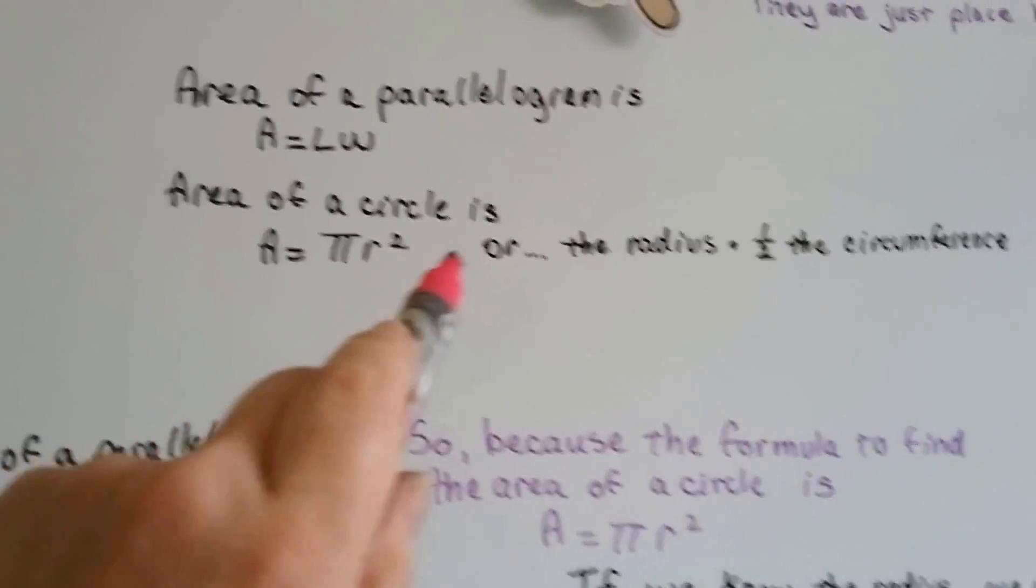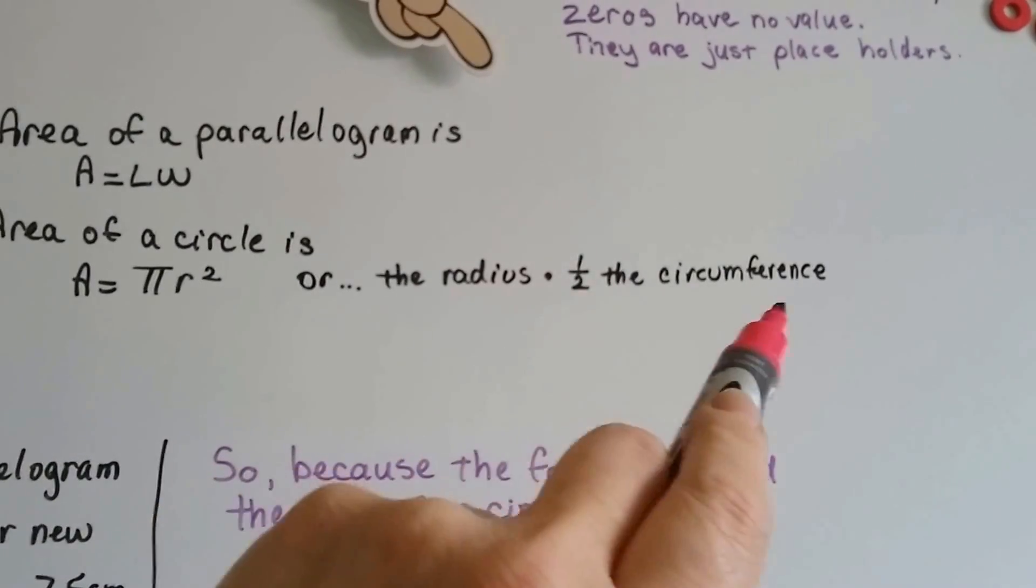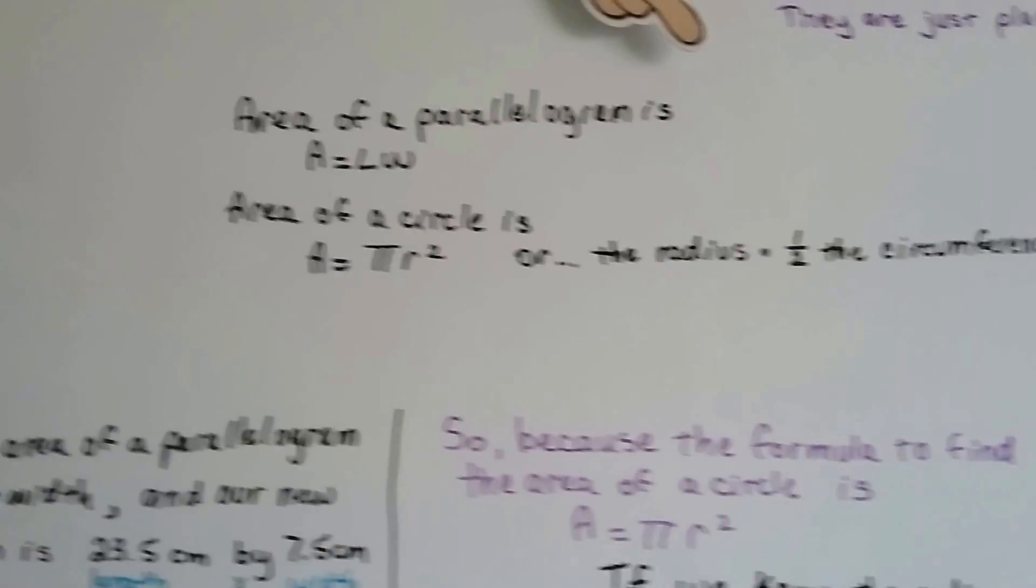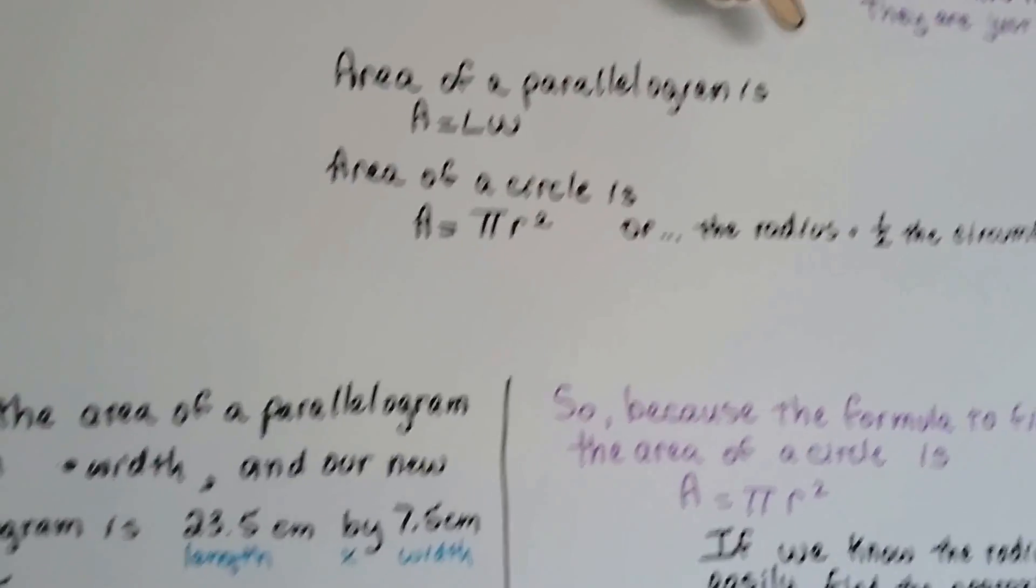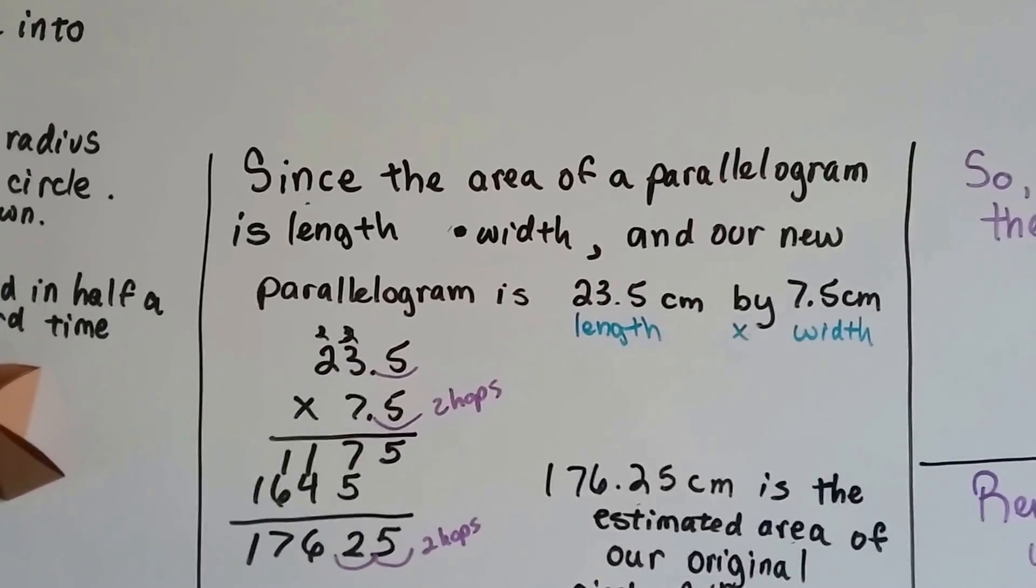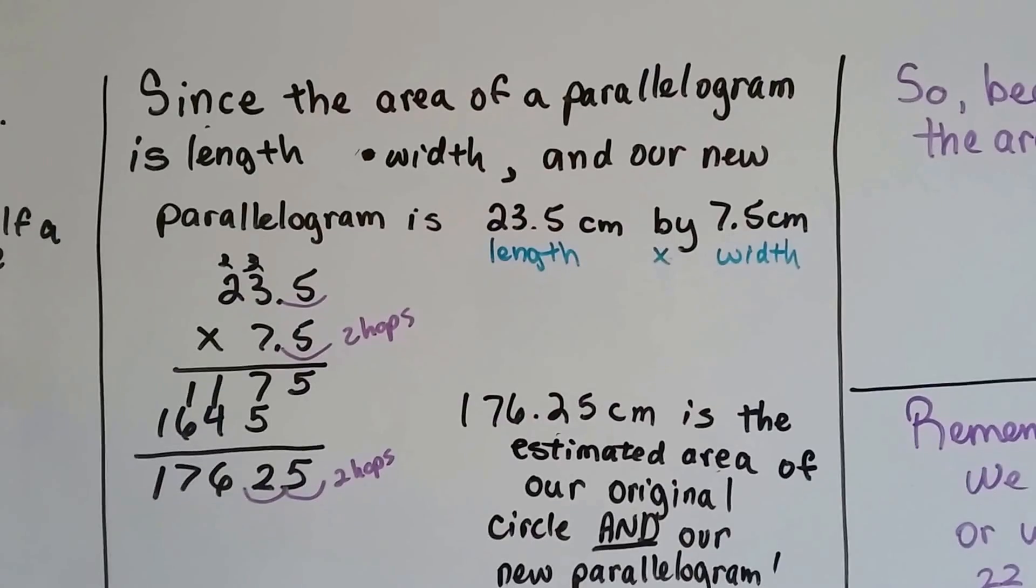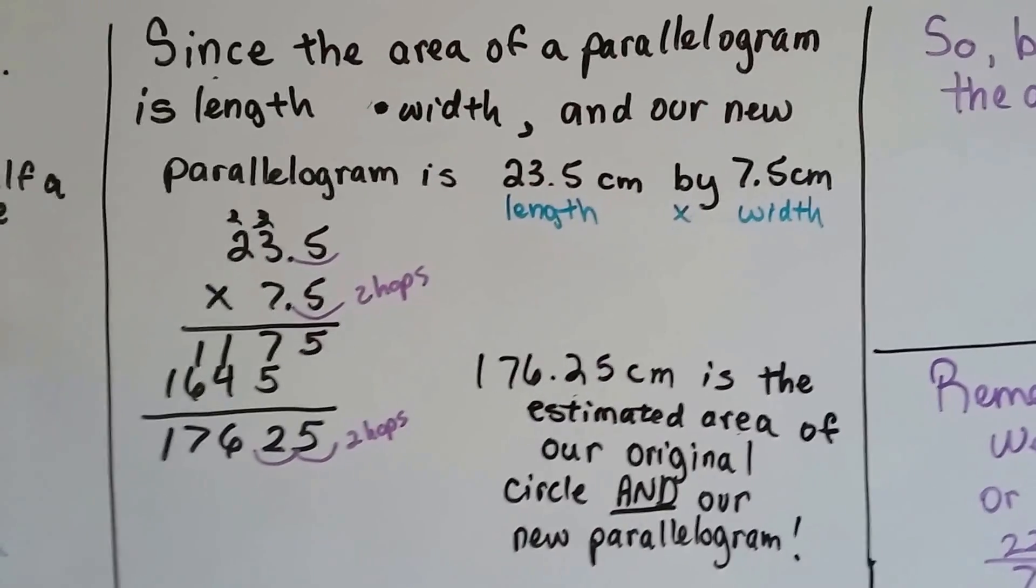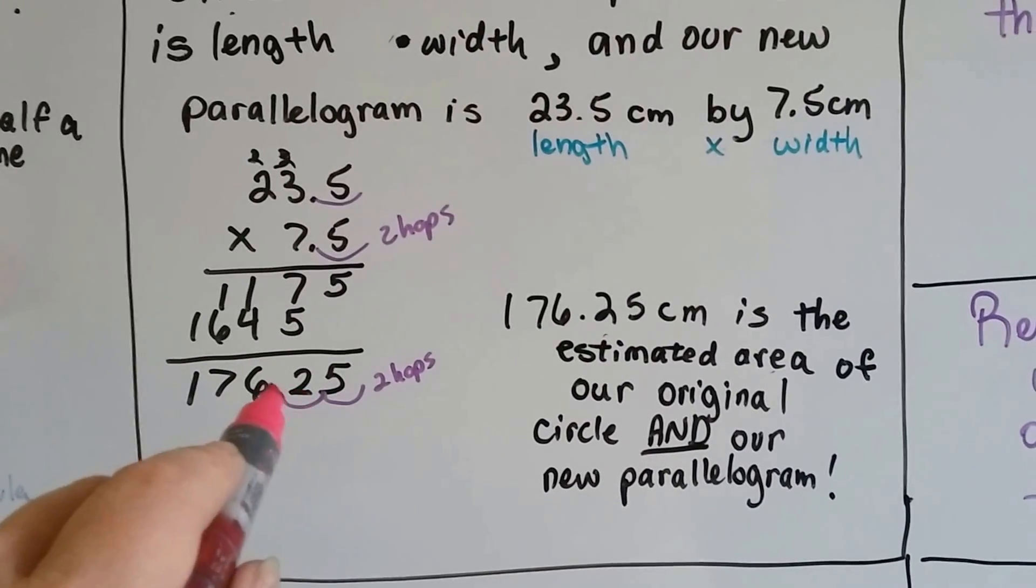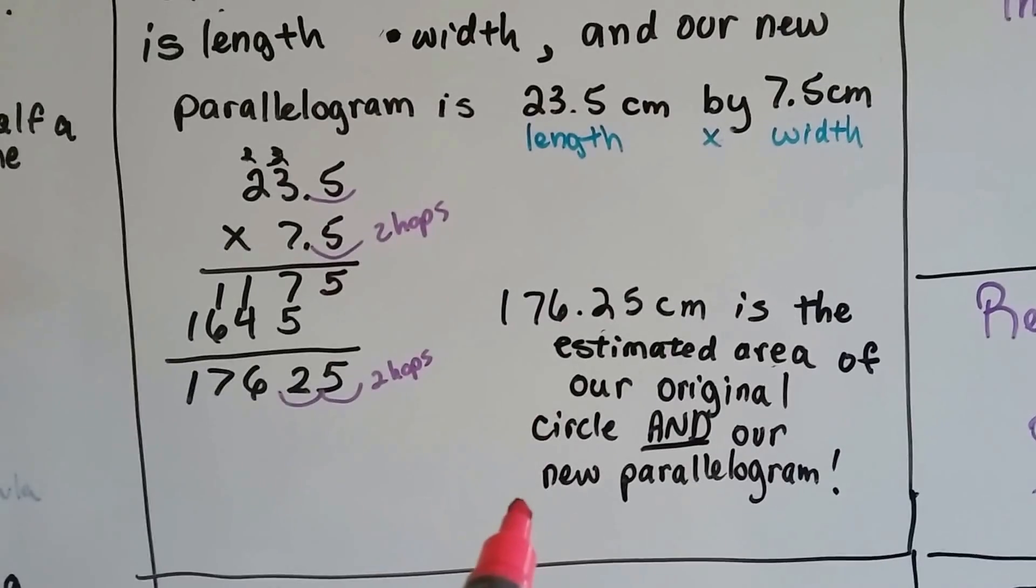So when you look at this, you can say my radius of 7.5 and half the circumference. That could be the area of a circle or of a parallelogram. Since the area of a parallelogram is length times width and our new parallelogram is 23 and a half centimeters by seven and a half centimeters, I multiplied the 23.5 by the 7.5 and I got 176.25. That's the estimated area of our original circle and our new parallelogram.